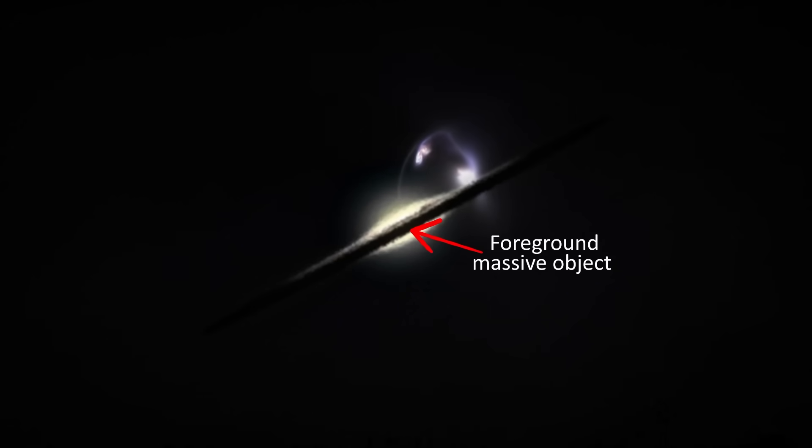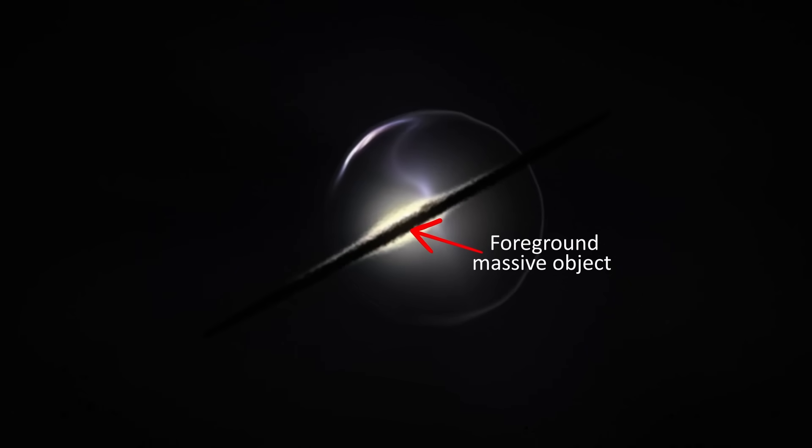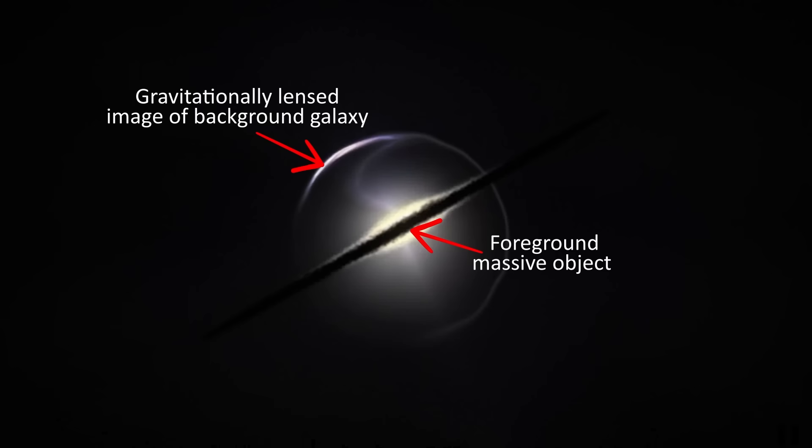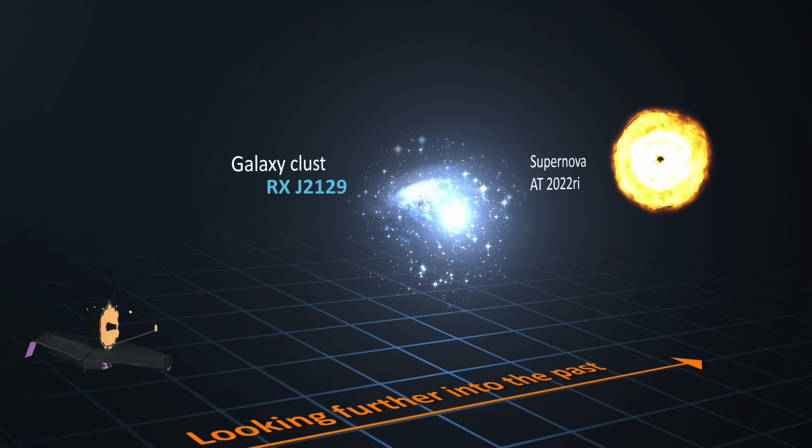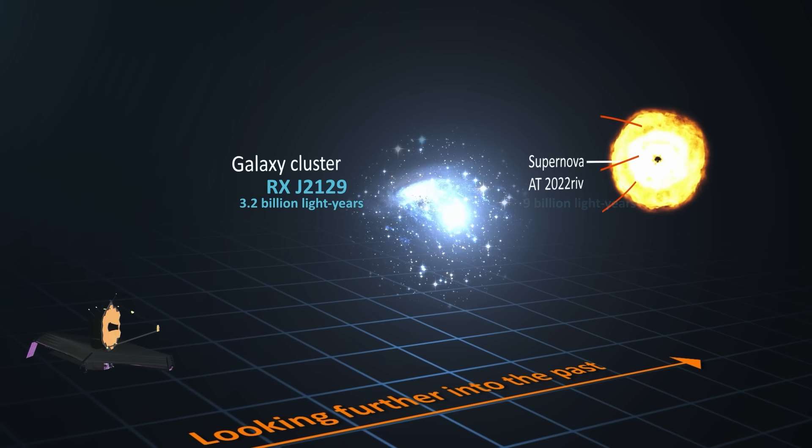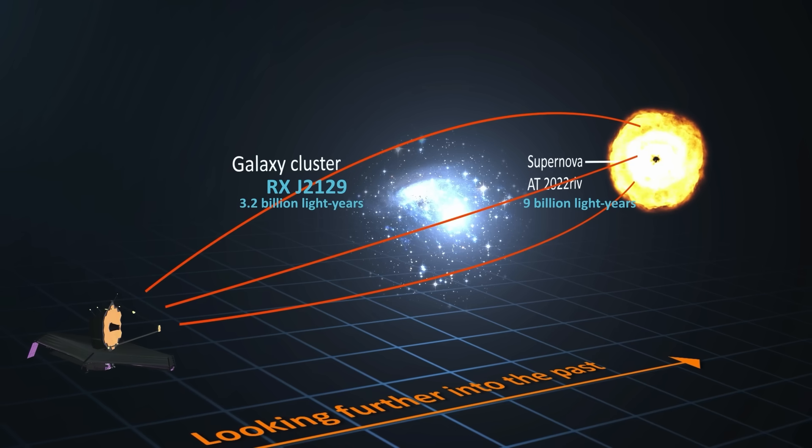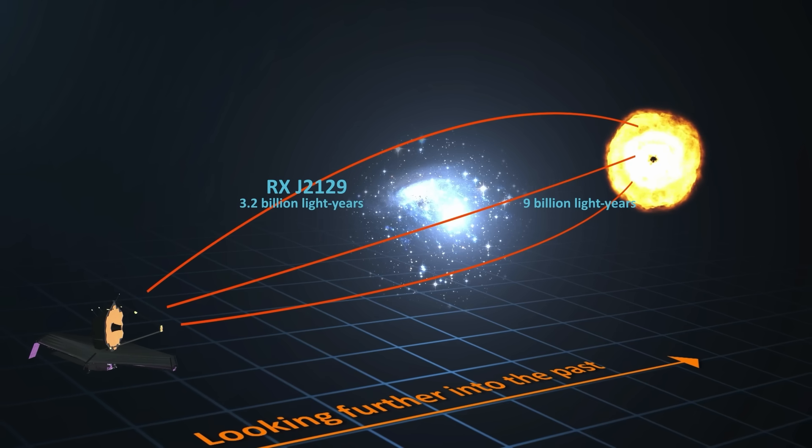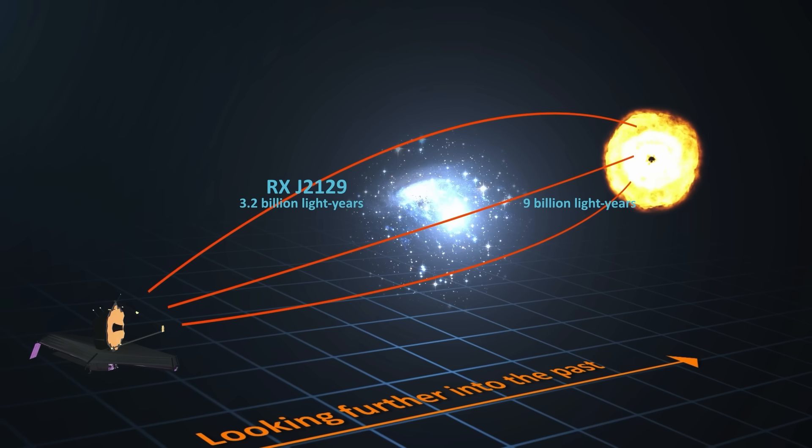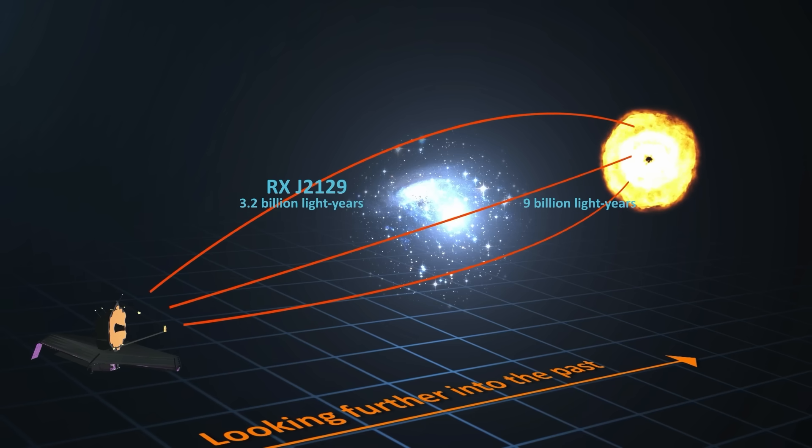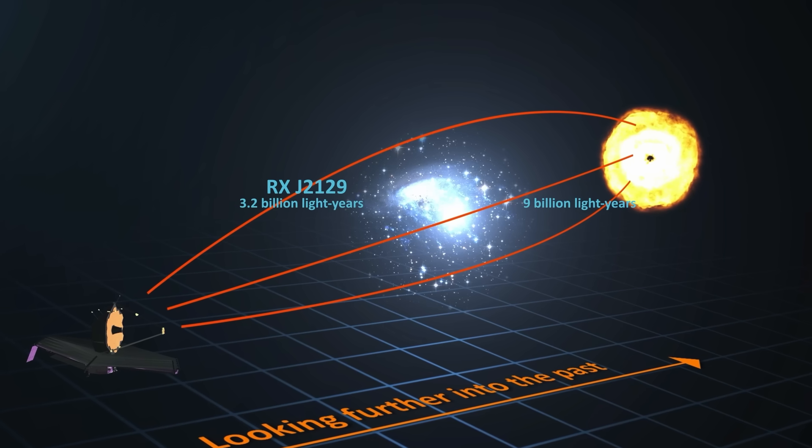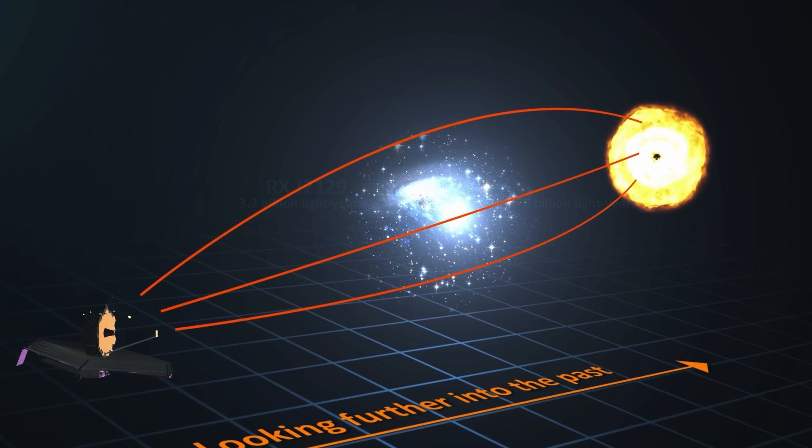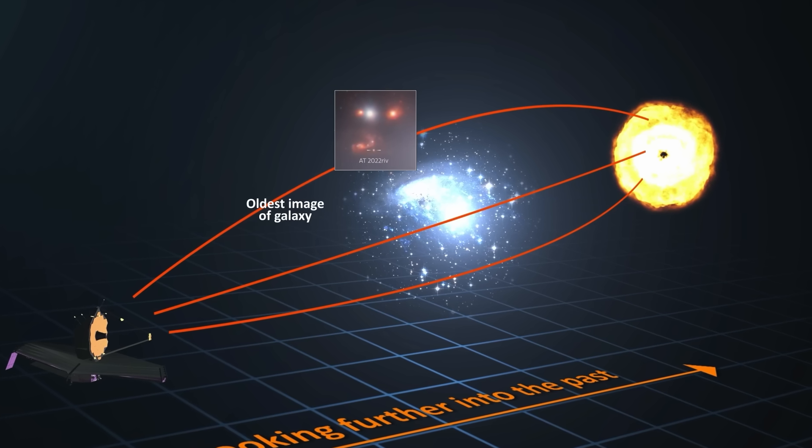And it turns out that the matter between us and the supernova is aligned in such a way that its light gets to us via three different paths. This is because a galaxy cluster called RX J2129 located 3.2 billion light years away lies directly in the path. And because mass in this galaxy cluster is distributed unevenly, rays of light emitted by the supernova are bent in different amounts. And so they take longer or shorter paths to us, resulting in separate images.